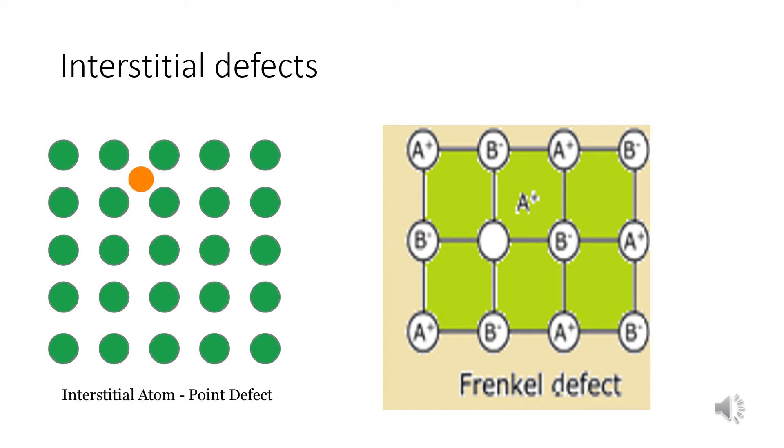It does not change the density of the solid. And Frenkel defect arises when an ion occupies an interstitial position between the lattice point. For example, silver bromide.